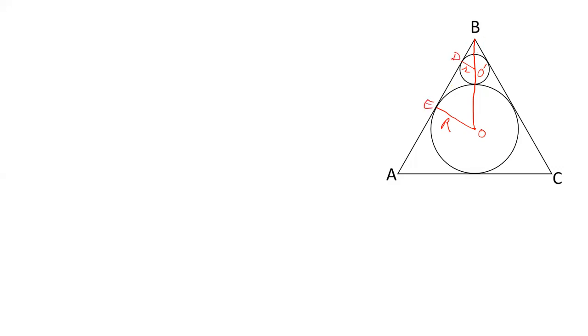So there are two triangles, BO'D and BOE. And we will prove that these two triangles are similar. And we will find out the radius by this, by proving these particular two triangles similar. Let us start.